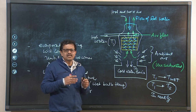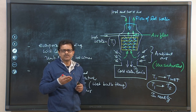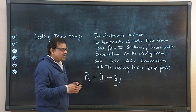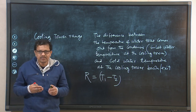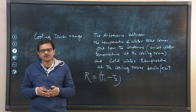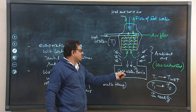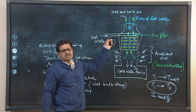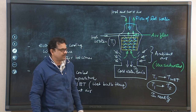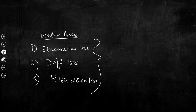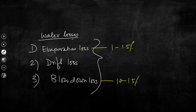There are three major losses: evaporation loss, drip loss, and blow down loss. All these losses need to be replenished by supplying makeup water. If makeup water is not supplied, the flow rate returning to the condenser will reduce, condenser efficiency will drop, and eventually total power plant efficiency will be affected. Typically, evaporation loss is 1 to 1.5 percent, blow down loss is also 1 to 1.5 percent, and drip loss is very minimal.